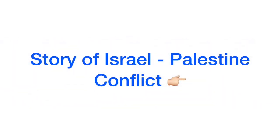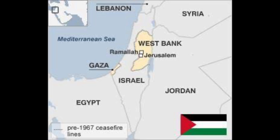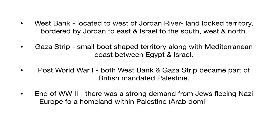Some important geographical facts before we begin: the West Bank is located to the west of the Jordan River — a landlocked territory bordered by Jordan to the east and Israel to the south, west, and north. The Gaza Strip is a small boot-shaped territory along the Mediterranean coast between Egypt and Israel. The story begins from World War One, where both West Bank and Gaza Strip became part of British Mandated Palestine.